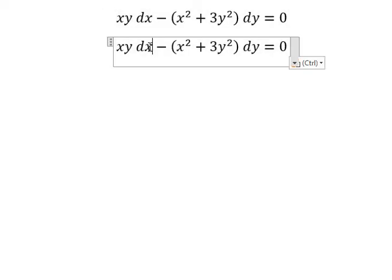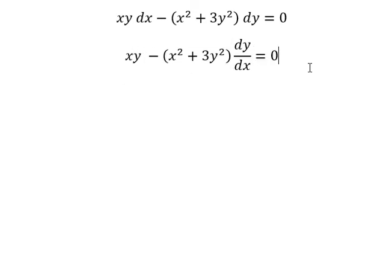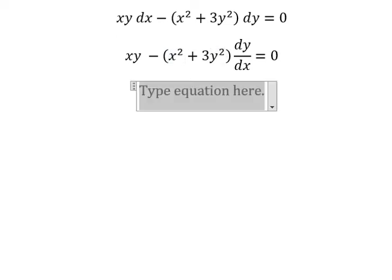We divide both sides by dx. Next, we have xy, x square, y square. They are degree number 2. So this is about homogeneous.